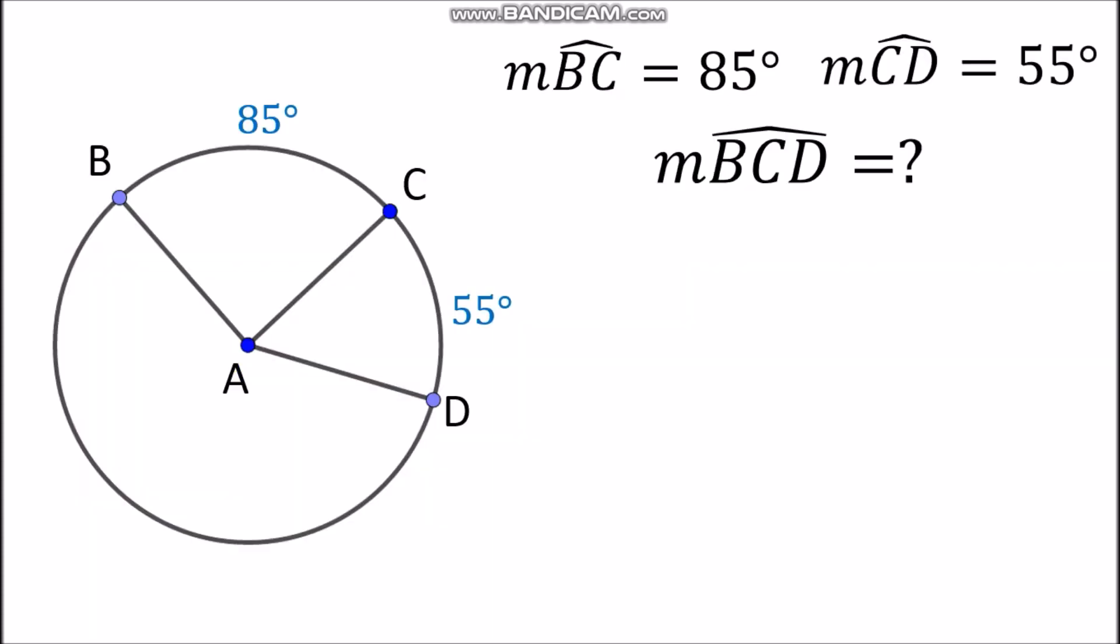Let's take a look at this example. Let's say we have this circle A wherein the measurement of arc BC is given, which is 85 degrees, and the measurement of arc CD is also given, which is 55 degrees. Now we need to find the measurement of arc BCD.